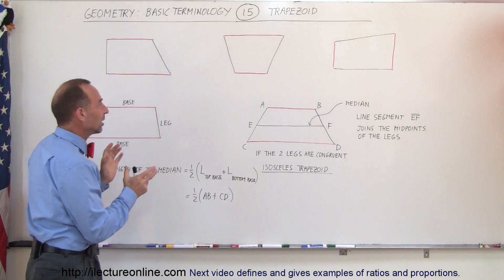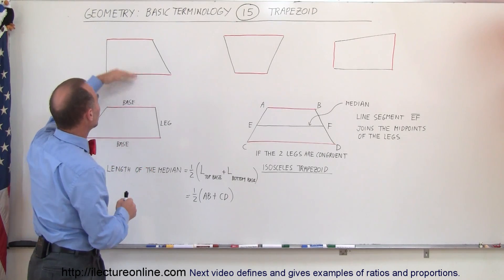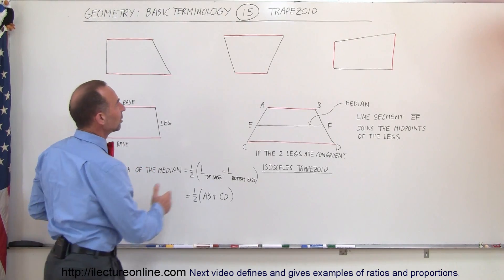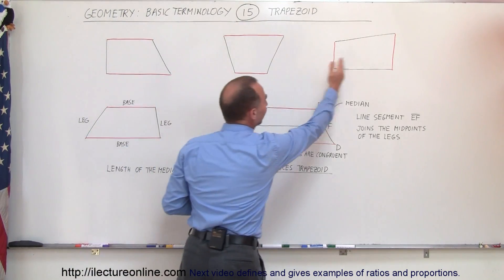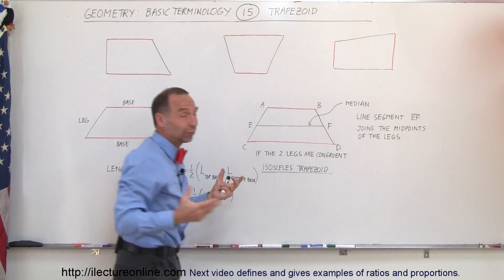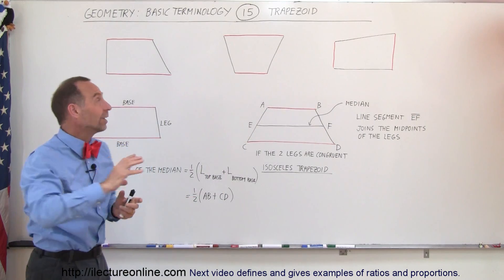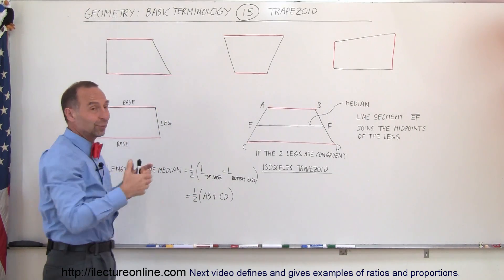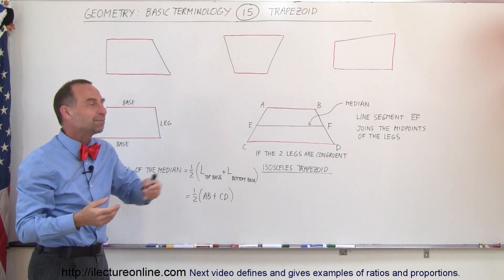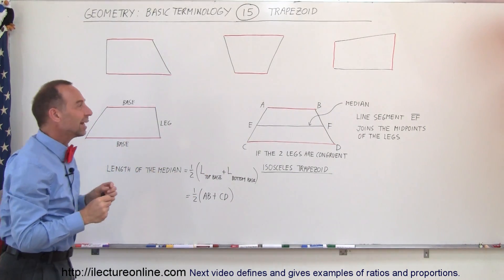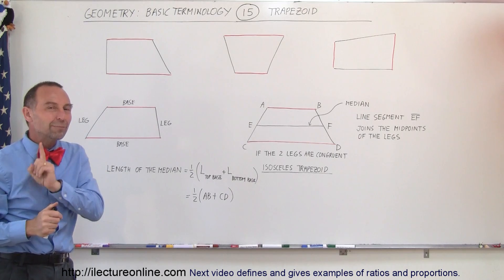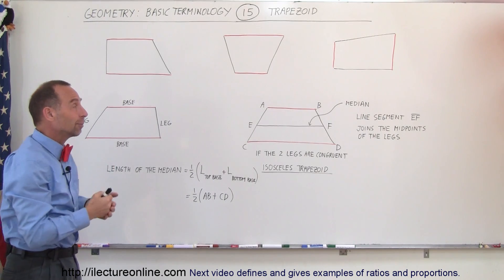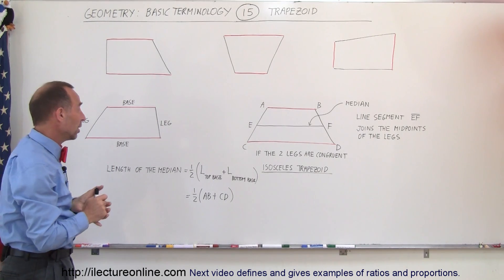You can see that the two parallel sides could be the top and bottom, or they could be the left and right. If we turn one of these around, we have the other type. So the trapezoid has only one pair of opposite sides that are parallel to one another.